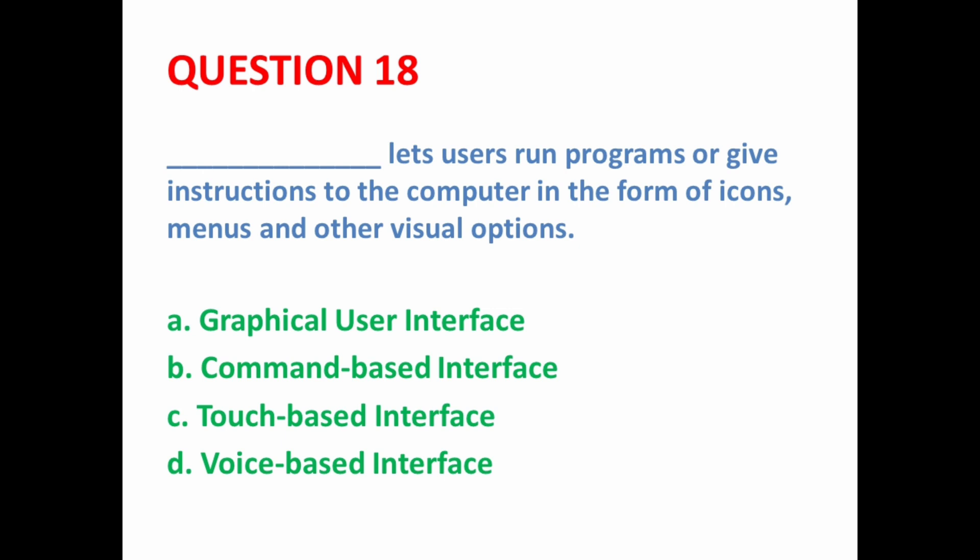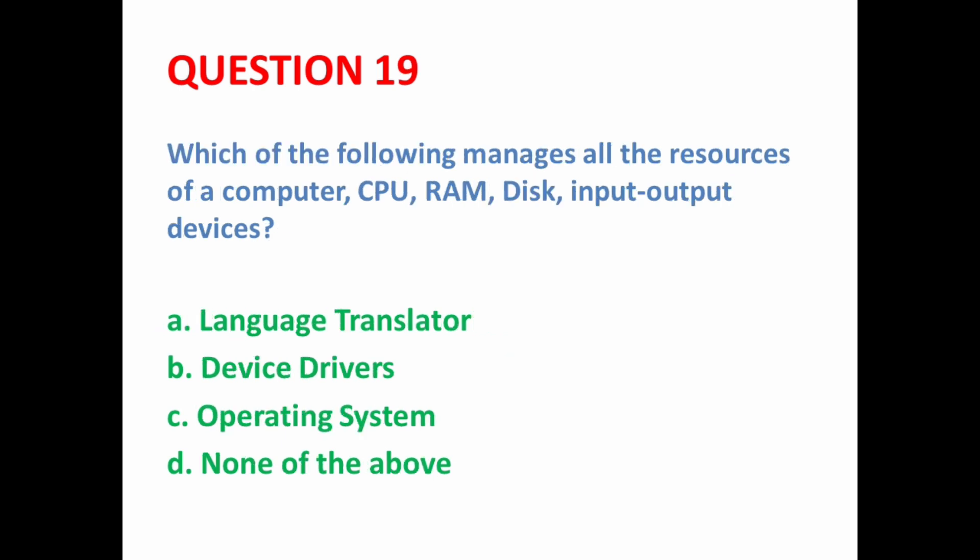Next MCQ: Dash lets users run programs or give instructions to the computer in the form of icons, menus, and other visual options. The answer is Graphical User Interface (GUI). Windows operating system is a graphical user interface — users interact through icons and menus in pictorial form. So here option A is the correct option.